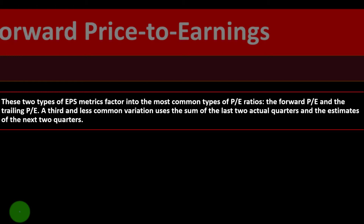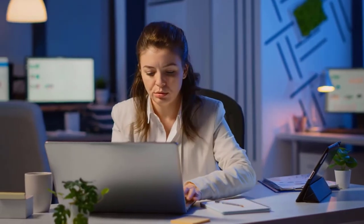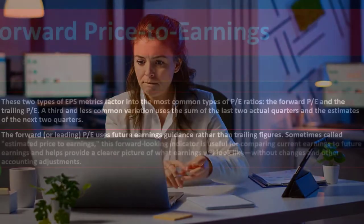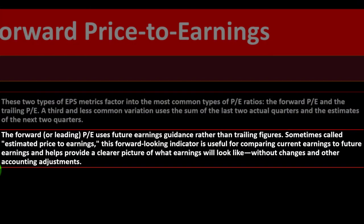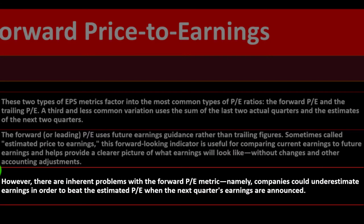The two types of EPS metrics — forward and trailing — factor into the most common types of PE ratios: the forward PE and the trailing PE. A third, less common variation uses the sum of the last two actual quarters and estimates of the next two quarters — a hybrid of past results and projected future earnings. The forward, or leading, PE uses future earnings guidance rather than trailing figures, sometimes called the estimated price to earnings. This forward-looking indicator helps compare current earnings to future earnings and provides a clearer picture of earnings without accounting adjustments.